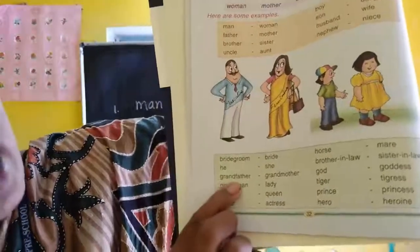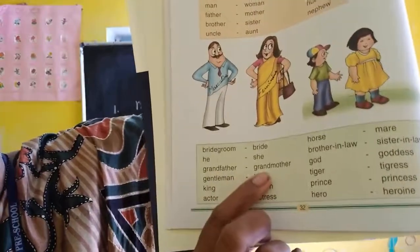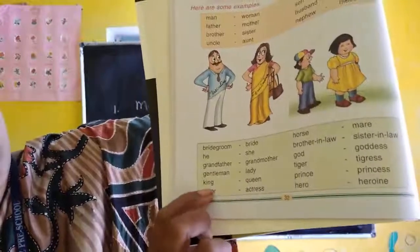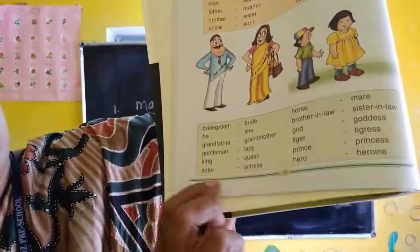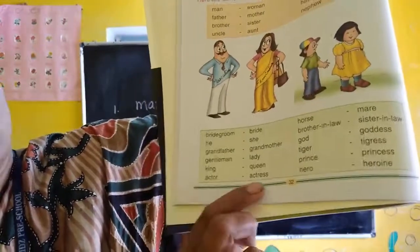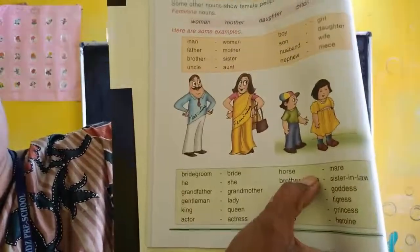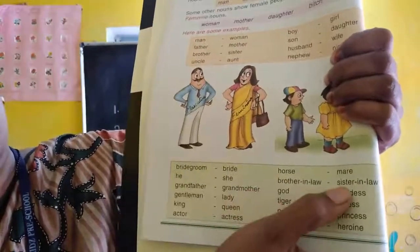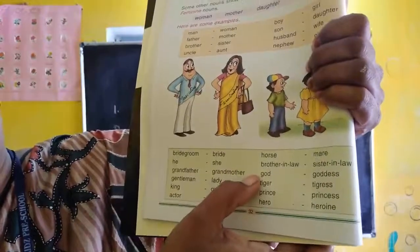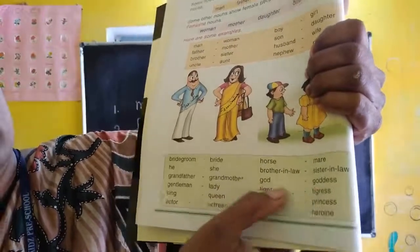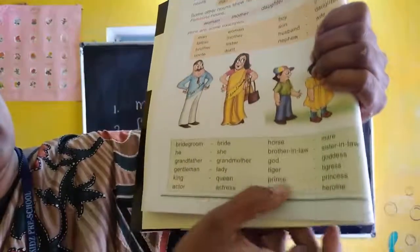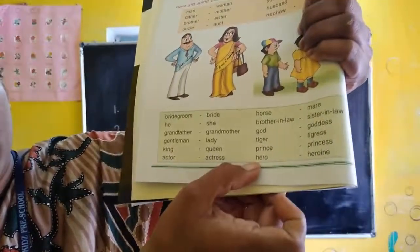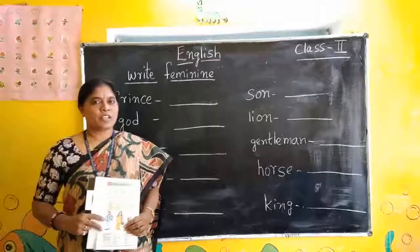Grandfather, grandmother. Gentleman, lady. King, queen. Actor, actress. Horse, mare. Brother, brother-in-law. Sister-in-law. God, goddess. Tiger, tigress. Prince, princess. Hero, heroine.